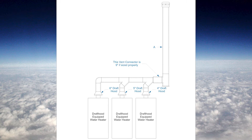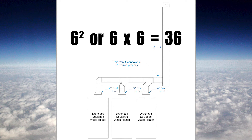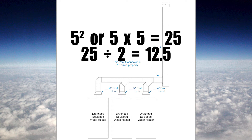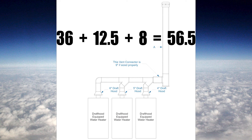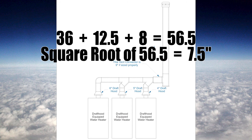For this example I've got three appliances being vented into one vent: a six inch draft hood, a five inch draft hood, and a four inch draft hood. 100% of the largest is six squared, which is 36, plus 50% of everything else. Five squared equals 25 divided by two is 12.5. Four squared equals 16 divided by two equals eight. So 36 plus 12.5 plus eight equals 56.5. Taking the square root of that gives 7.5 inches, so the size of my vent will be eight inch.